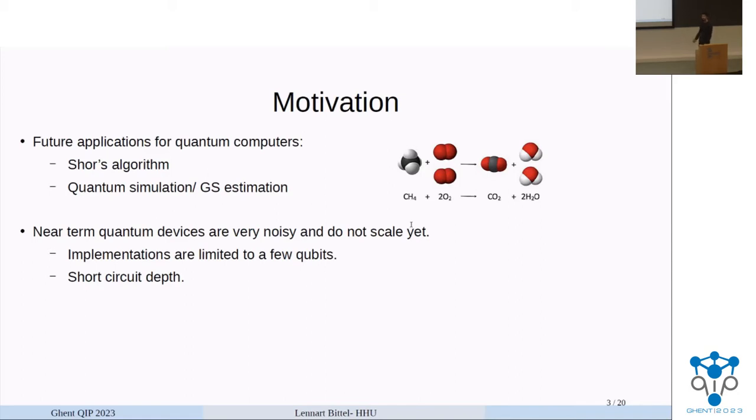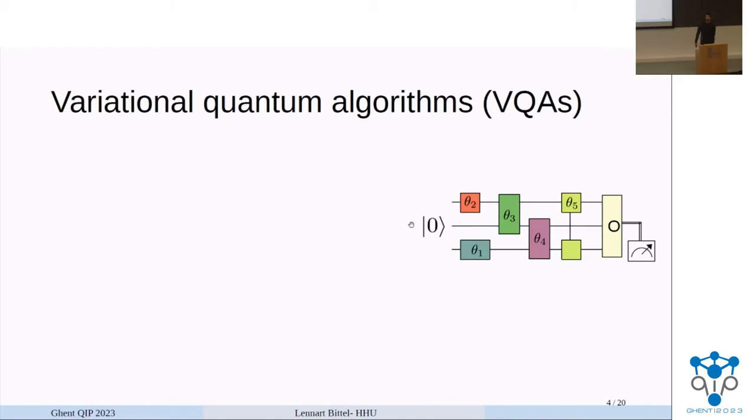This means effectively two things: our implementations need to be limited to a few qubits, and also we need to have really short circuits, since otherwise the noise component of our gates will start dominating. So the main question then is, can we use those near-term devices actually to perform anything which is practically useful? One of the main proposals to tackle this problem are variational quantum algorithms, short VQAs.